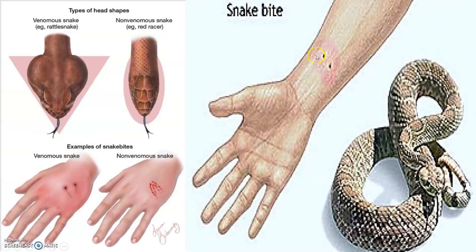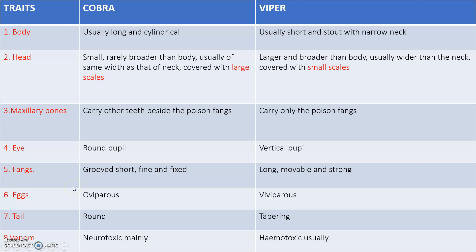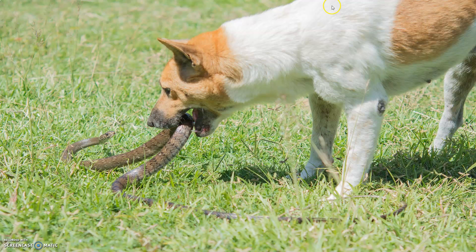Looking at the bite: a non-venomous snake leaves a semi-circular bite mark, whereas a venomous snake leaves two small dots. These are the key differences between cobra and viper bites as well.